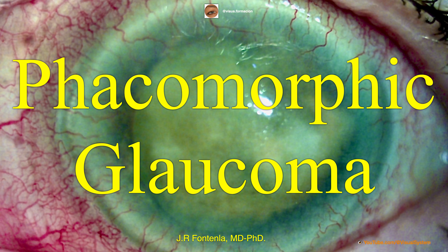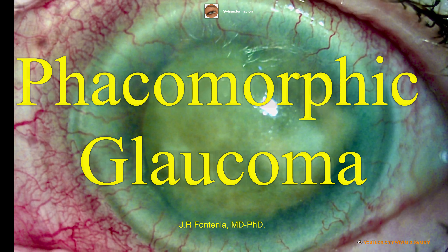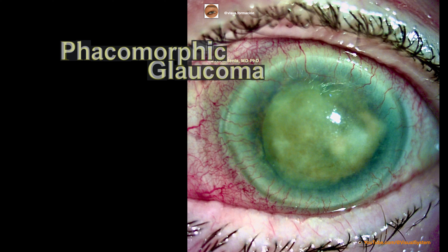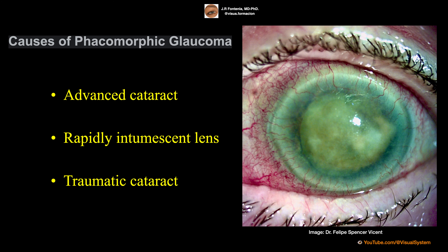Phacomorphic glaucoma is the term used for secondary angle closure glaucoma due to lens intumescence. Phacomorphic glaucoma can be caused by an advanced cataract, a rapidly intumescent lens, or a traumatic cataract.